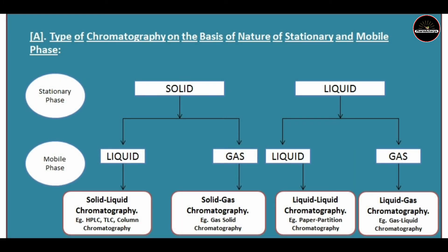Types of chromatography on the basis of nature of stationary and mobile phase. The stationary phase may be solid or liquid, and the mobile phase may be liquid or gas. When stationary phase is solid and mobile phase is liquid, the classification becomes solid-liquid chromatography. This type includes HPLC, TLC, and column chromatography.